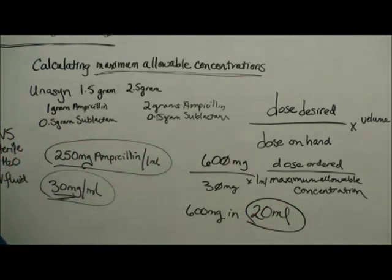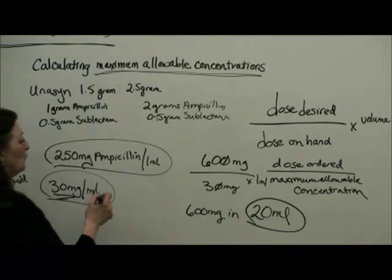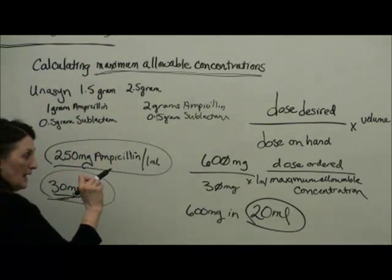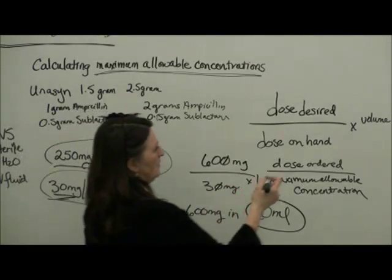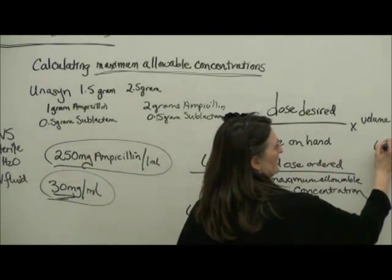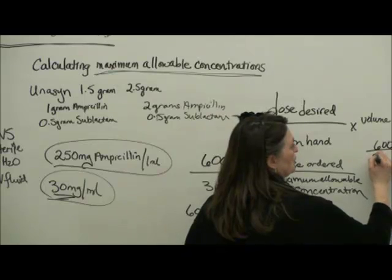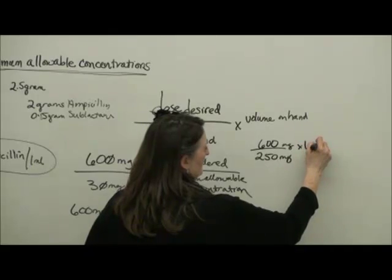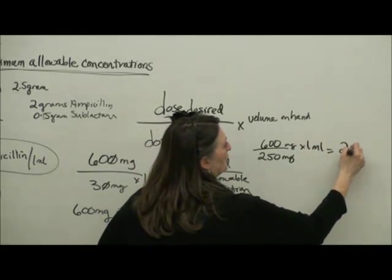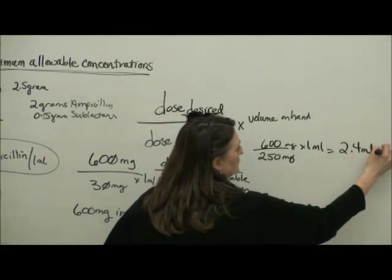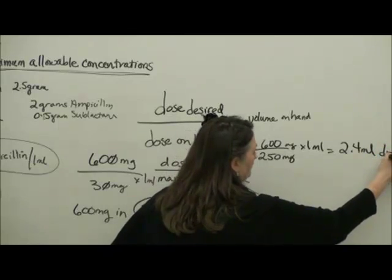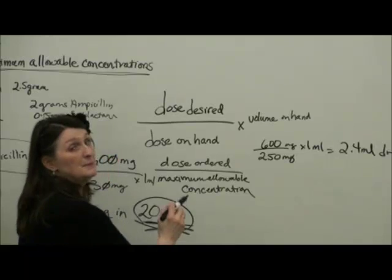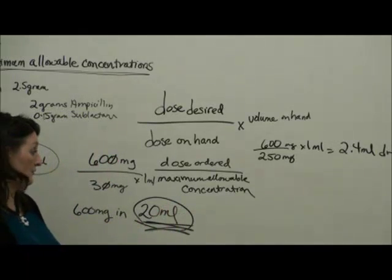So how we're going to do this is we are going to draw up our concentrated med, which remember, we'll need to do 600 divided by 250 mg in a mL. We needed to draw up 2.4 mL of that drug. But that needs to be in a total volume minimum. It can be more if your patient's not fluid restricted.